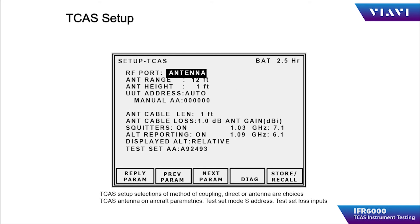Pressing the next parameter or previous parameter soft key will move the cursor to the next or previous operator input. Select a suitable location for the test set antenna so that the aircraft TCAS antenna has a clear line of sight view and is free from obstructions that will cause RF reflections.